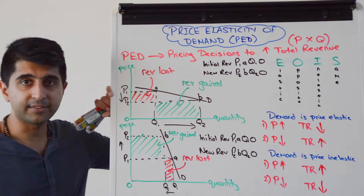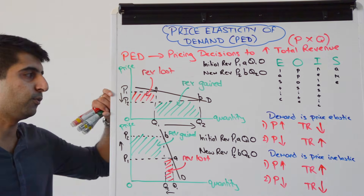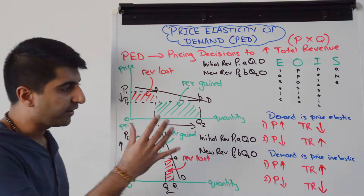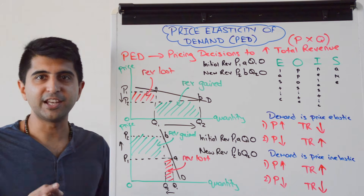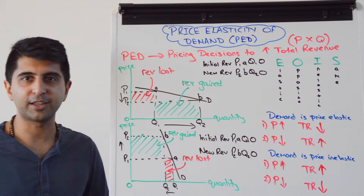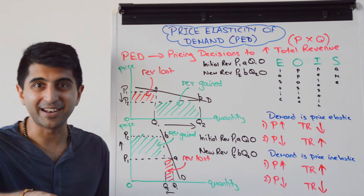When demand is price elastic, reduce price to increase total revenue. When demand is price inelastic, raise price to increase total revenue. This is a very important relationship in economics. Thank you so much for watching — I'll see you in the next video.